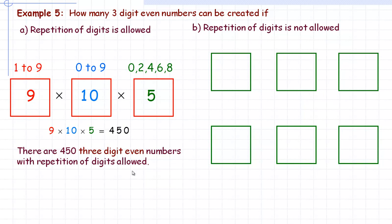To clarify: repetition of digits allowed means you could have a number like 388, where the 8 is repeated, or even 222. In part B, repetition is not allowed — all digits must be different. Numbers like 388 or 222 would be okay for part A but not for part B.